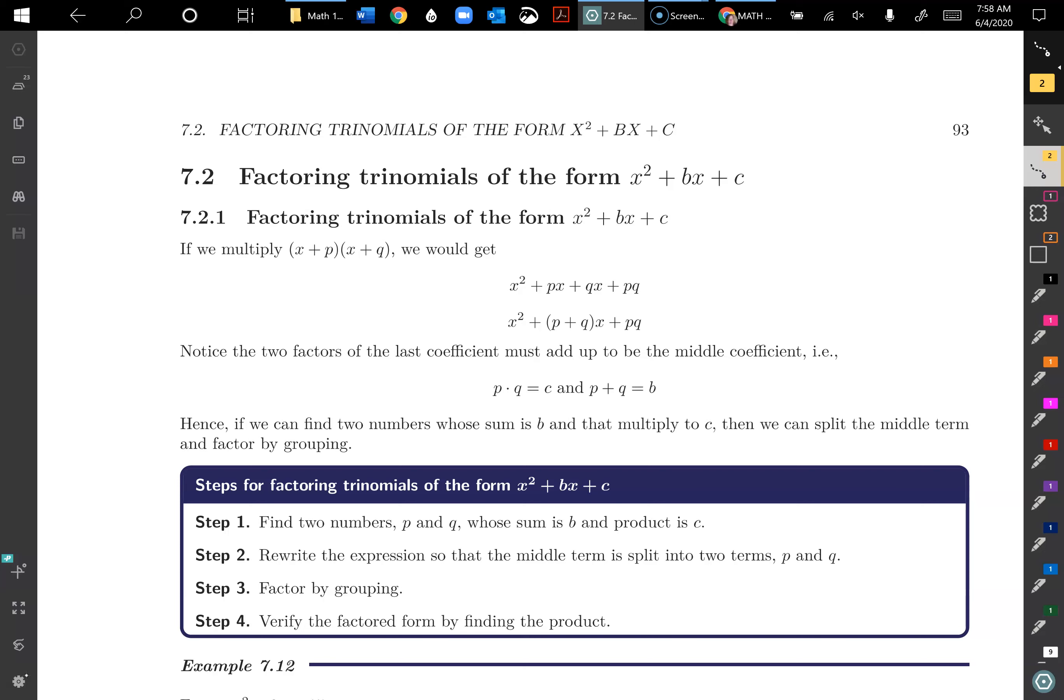So here's some steps. Just pause the video and read through the steps and I will go over them. Step one is find two numbers, p and q, whose sum is b and product is c. So as I go through the examples, I'll reference back to this, but think that we want to find things that sum to b with a product of c. So we're looking what adds up to that middle term, what factors of c. I think of it that way, factors of c that sum to b.